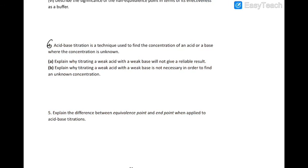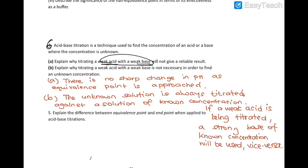Acid-base titration is used to find the concentration of an acid or a base. Explain why titrating a weak acid with a weak base will not give reliable results: there is no sharp change in pH as the equivalence point is reached. We never need to titrate weak acid against weak base because the unknown solution is always titrated against a solution of known concentration — a strong base for a weak acid, or a strong acid for a weak base.